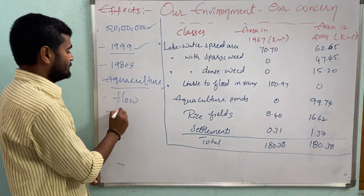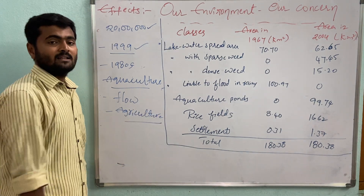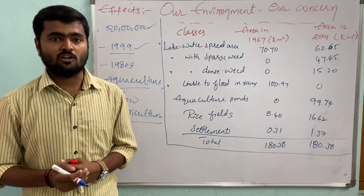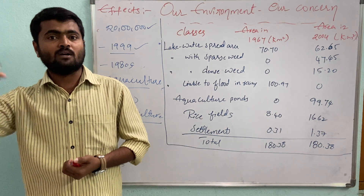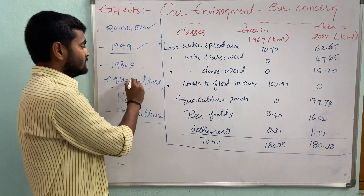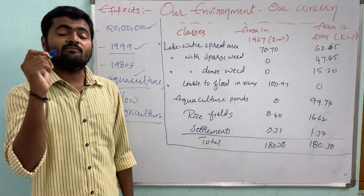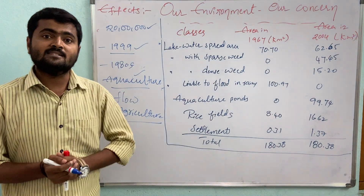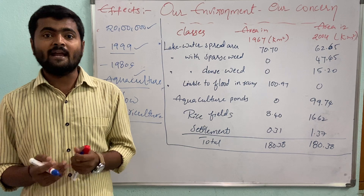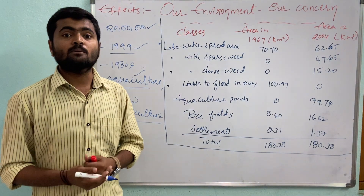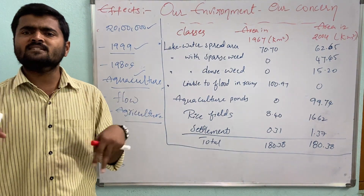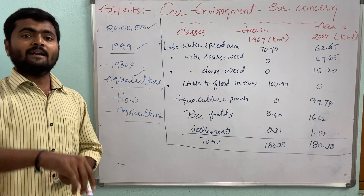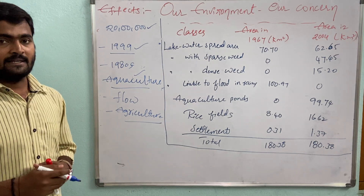Because of agriculture, agricultural runoff carrying pesticides, insecticides, and herbicides started reaching aquatic bodies like Kolleru Lake. Aquaculture ponds discharged fish pond waste directly into the lake. Industries released hazardous chemicals directly into Kolleru, and urban cities released municipal waste and drainage directly into the lake.